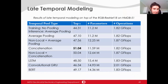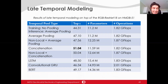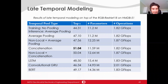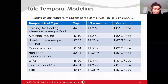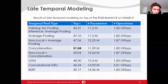This shows late temporal modeling performance on 2D ResNet architectures with RGB modality. Among the pooling types, concatenation pooling types are the best, with BERT being the second best. Note that the non-local block here is not a standard multi-point non-local architecture — there is just a single non-local block placed just before the pooling layer to create spatio-temporal relations. Non-local increases the performance of average pooling but decreases the performance of concatenation pooling.